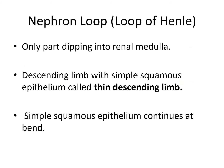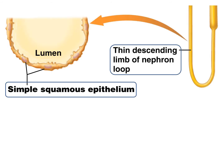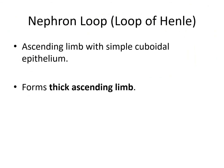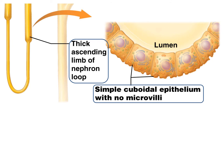The nephron loop, or loop of Henle, is the only part that dips into the renal medulla. There is a descending limb with simple squamous epithelium called the thin descending limb, which continues at the bend of the loop. The ascending limb is composed of simple cuboidal epithelium and forms a thick ascending limb. It has no microvilli, so reabsorption is not a major function here. The ascending limb is thicker because it contains many more mitochondria, suggesting more ATP-dependent processes occur there.